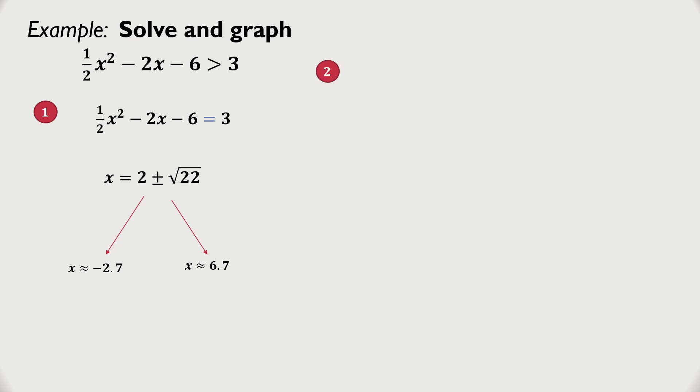It might be easier to work if I change those to decimals, so the approximation is negative 2.7 and 6.7. Step two involved breaking a number line into regions. I have negative 2.7 here and 6.7 here. That gives me three different regions. I'm going to call them region A, region B, and region C.